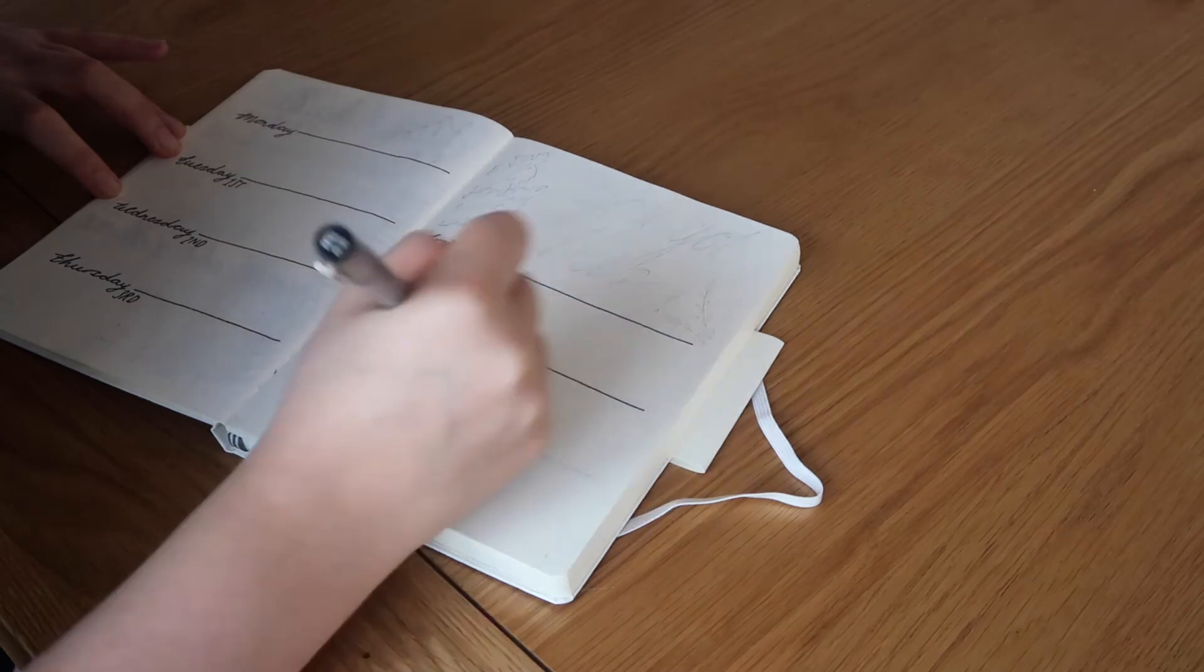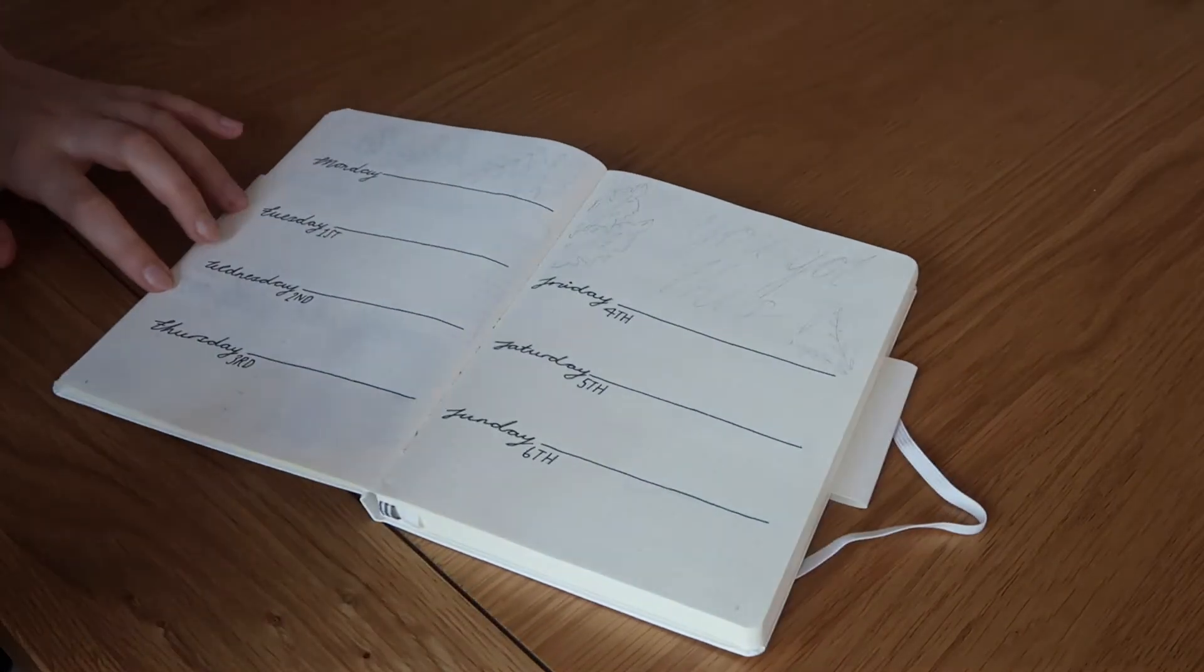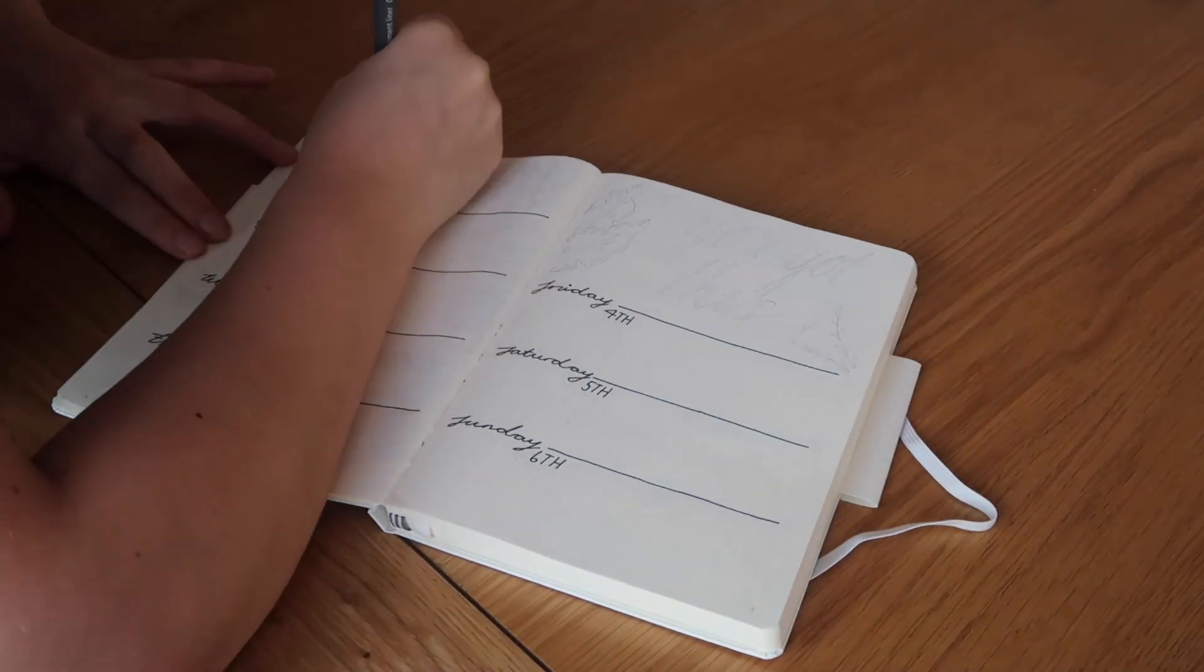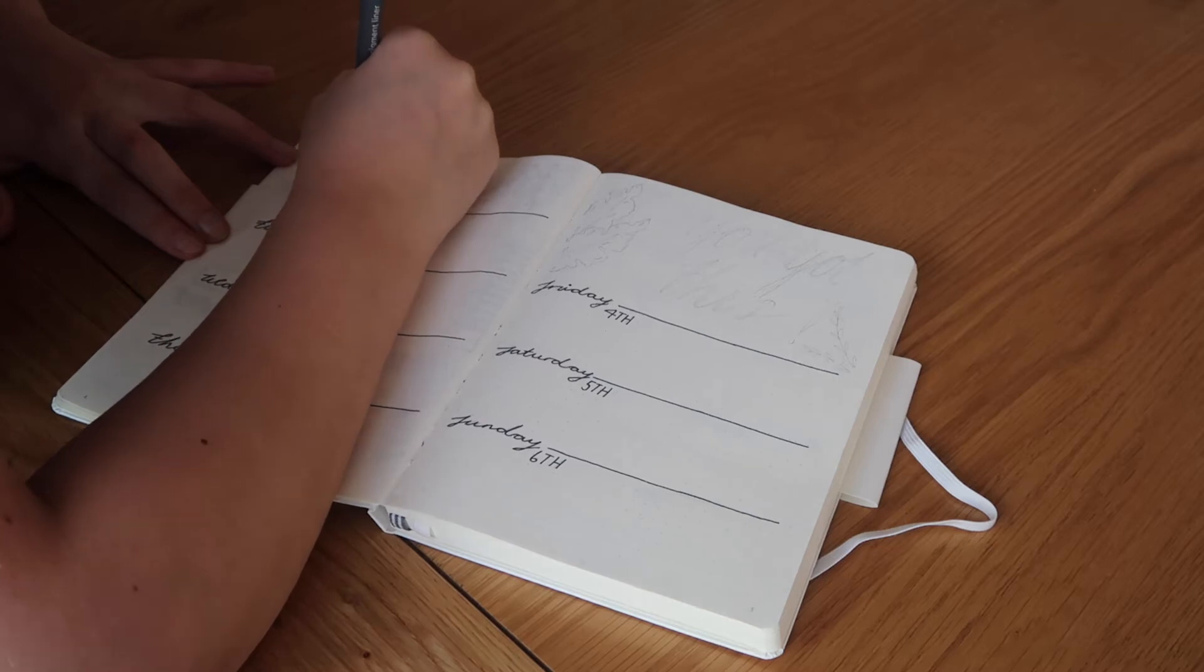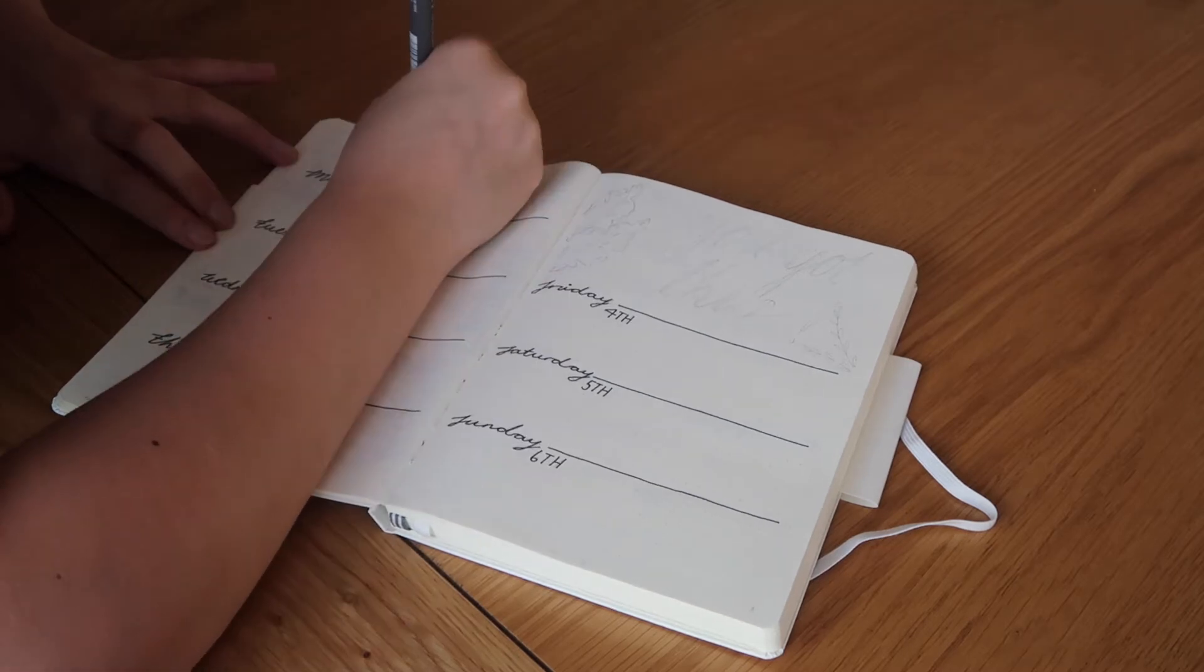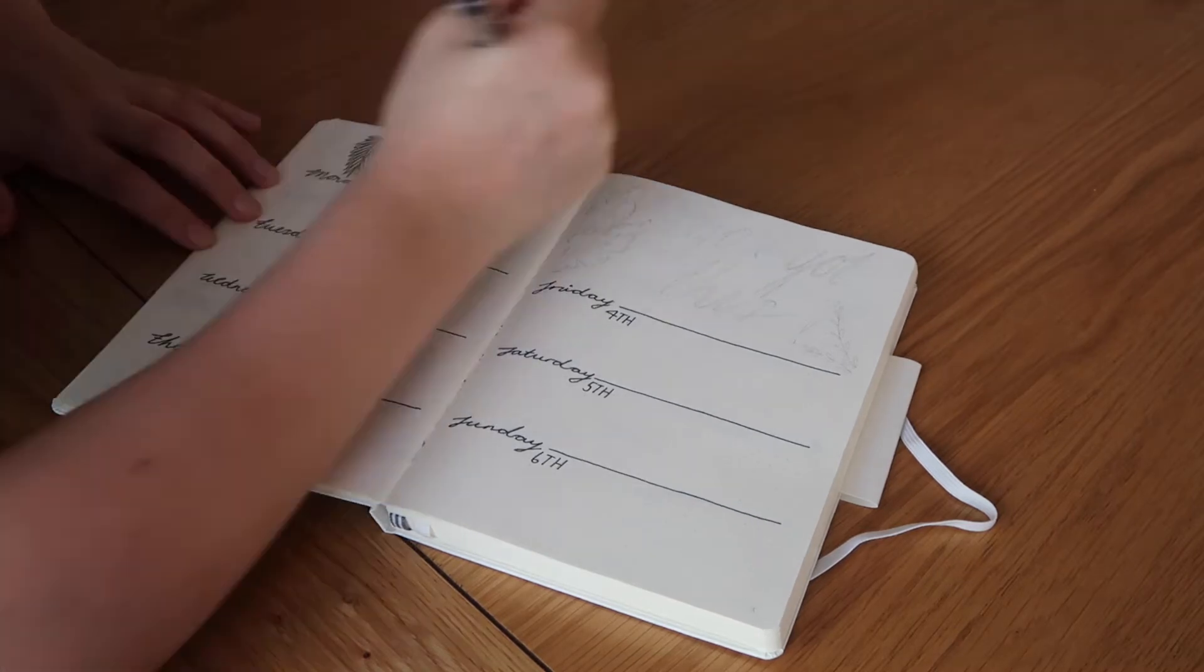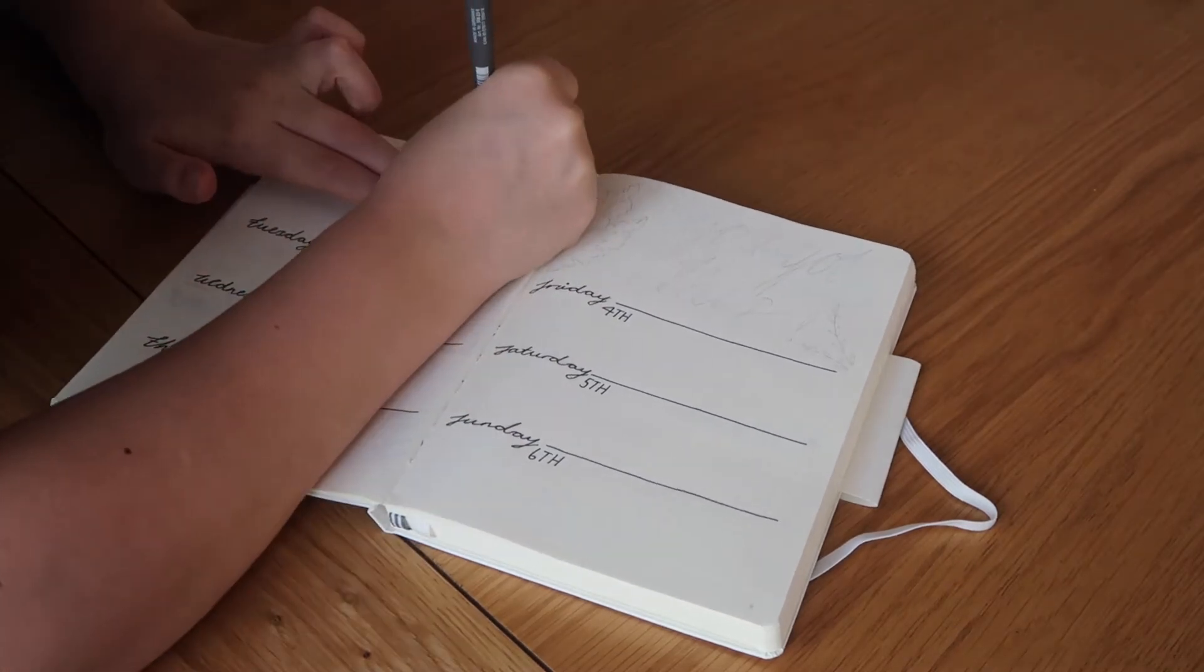And basically I just filled the rest of the gaps and made the page look pretty to keep my theme with the leaves. Obviously on the top of this one I did a few different ones. You can literally go with whatever you want to go with.